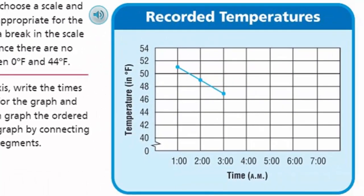They've plotted some points already: one o'clock at 51, two o'clock at 49, and three o'clock at 47 — all correct. Now we need to add the remaining points. Four o'clock is 44, which falls right on the line. Five o'clock is 45. Six o'clock is 44. Seven o'clock is 46. Our points are going in all different directions.